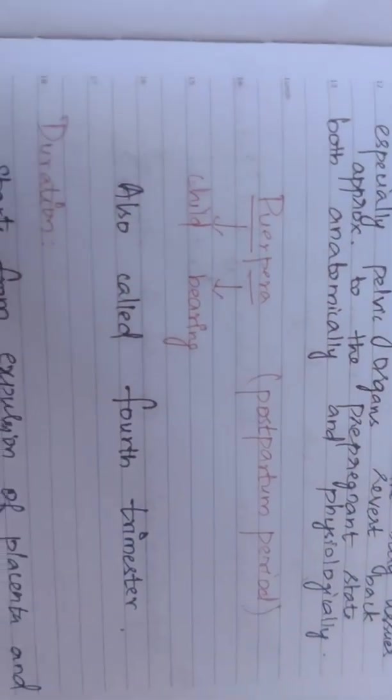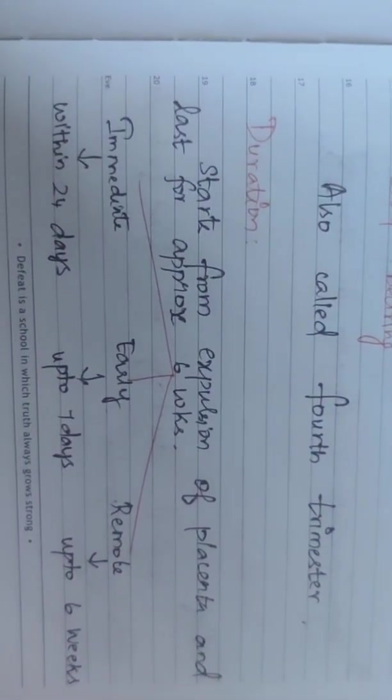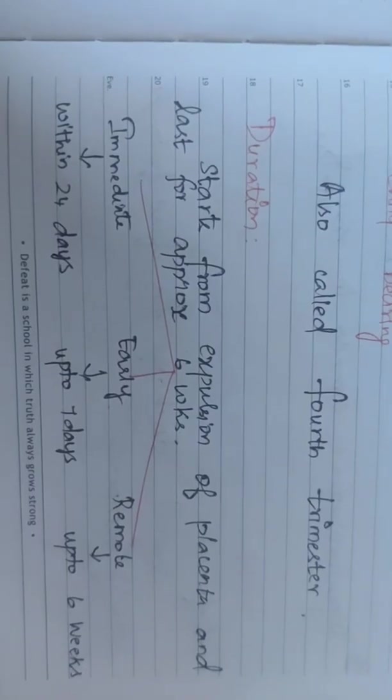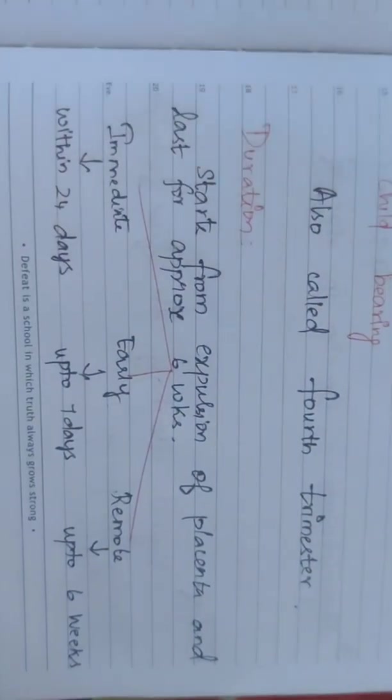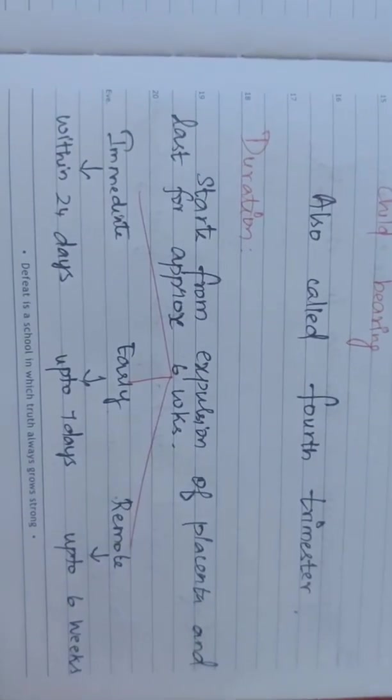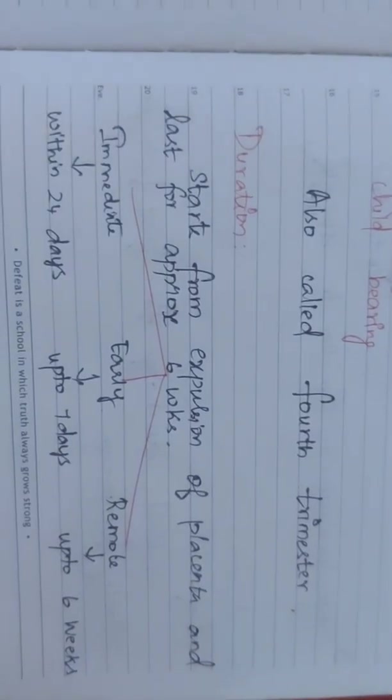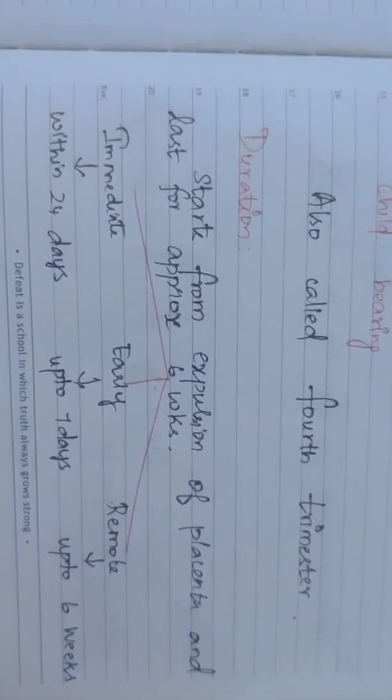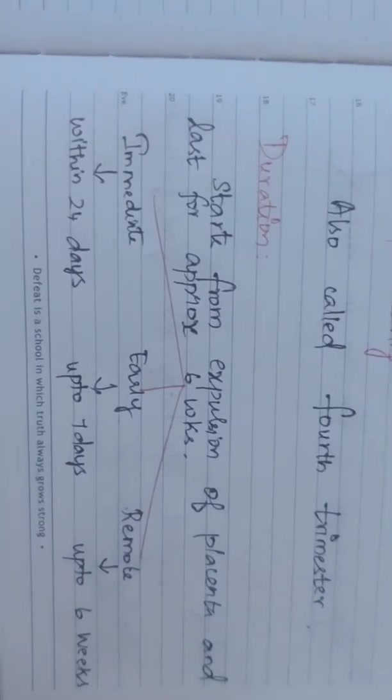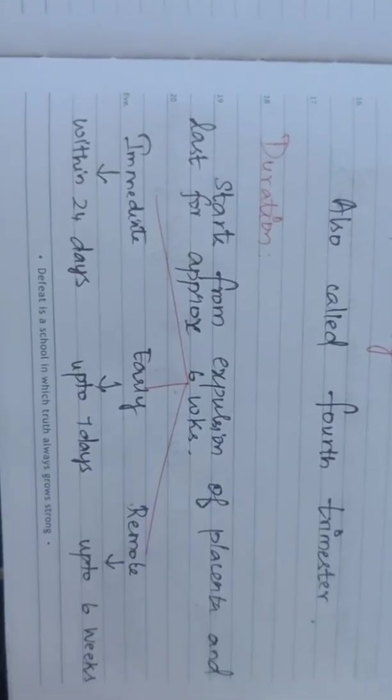It is the fourth trimester. This duration starts from expulsion of placenta and lasts for approximately six weeks. There are three types: immediate within 24 hours, early up to seven days, and remote up to six weeks.